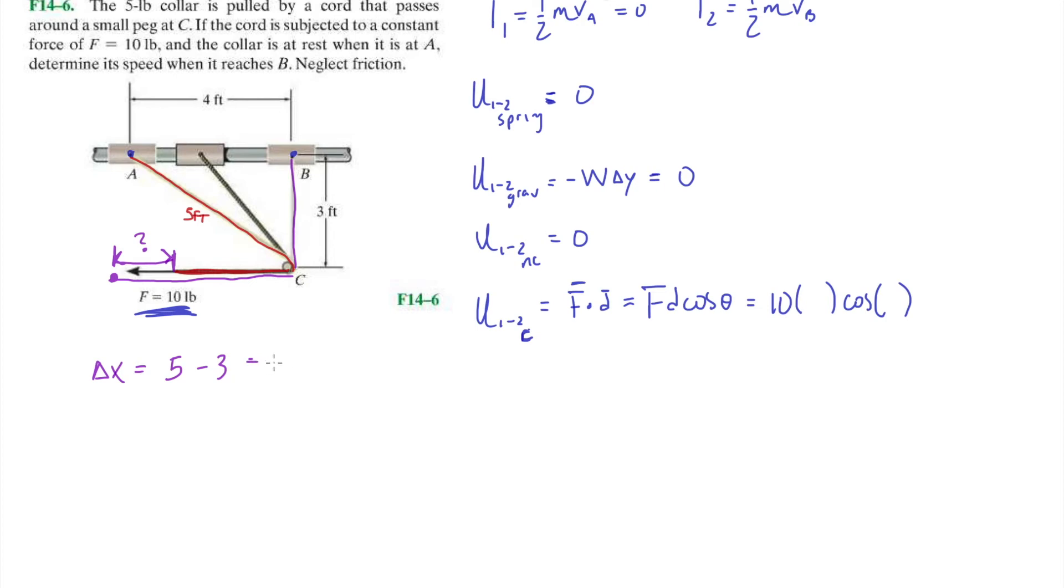So then, what does that tell us about the distance that it changed? Well, initially, let's say delta X, right? It's, you can just say 5 minus 3, right? This is, that's the total distance that I pulled it for.